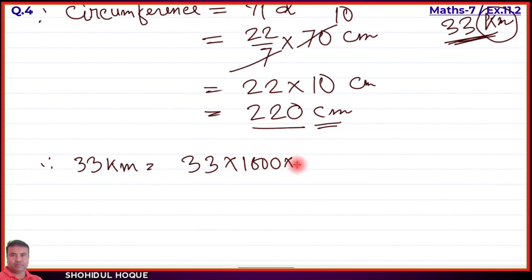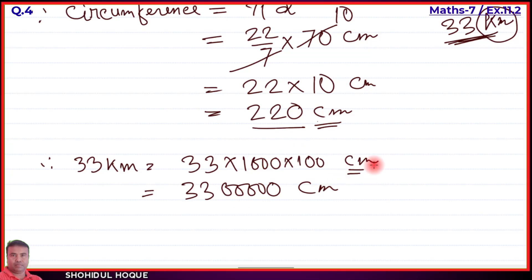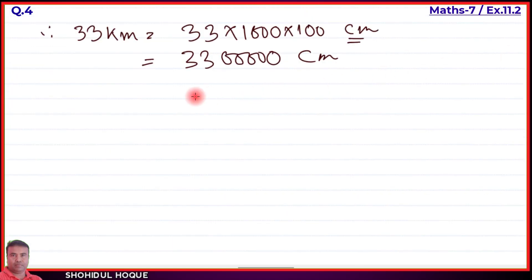So 33 kilometer equals 33 into 1000 into 100 centimeter. Multiplying: 33 followed by five zeros, which is 33 lakh centimeter, that is 3,300,000 centimeter. This is the total distance of 33 kilometer converted to centimeter.